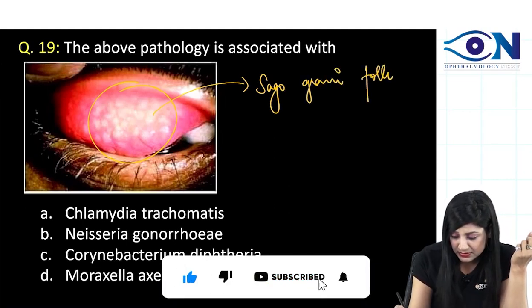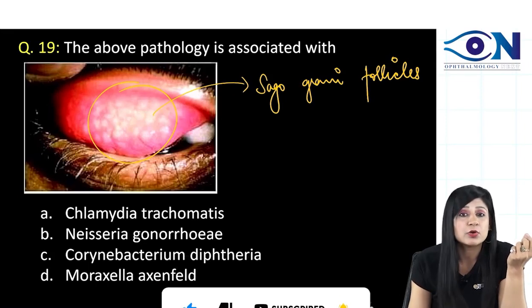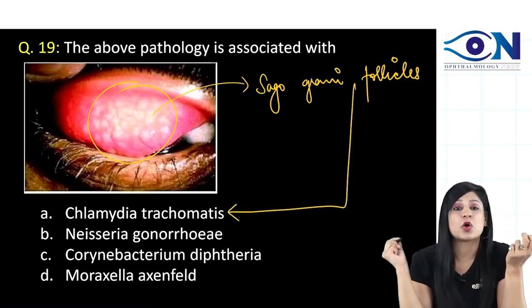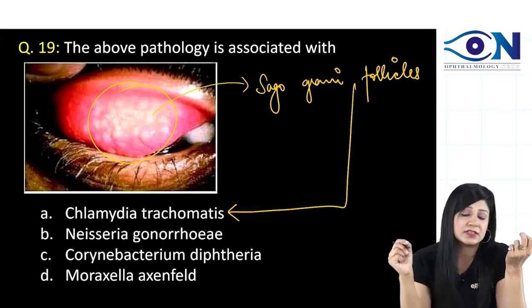The typical Sago grain follicles, and just now I told you where do you get the Sago grain follicles in trachoma, which is caused by Chlamydia trachomatis.